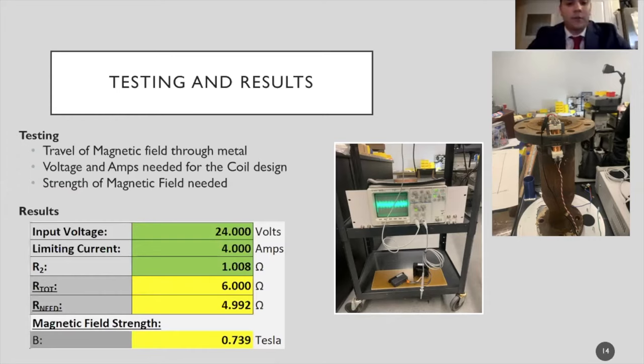For the results, we have an input voltage of 24 volts, a limiting current of 4 amps. Our resistor is 1 ohm. The total resistance of the circuit is 6 ohms, and the resistor needed for the circuit is about 5 ohms. For the magnetic field strength, we got 0.739 Teslas.